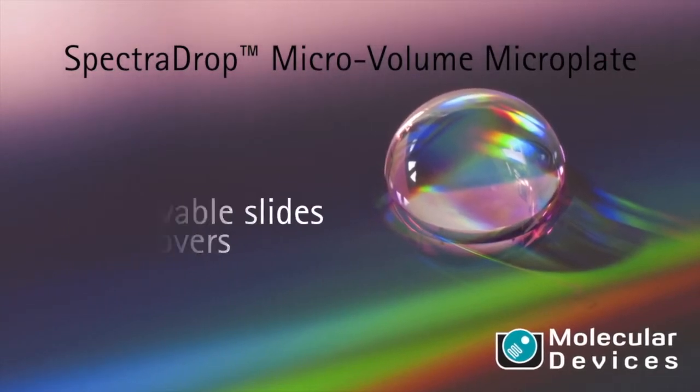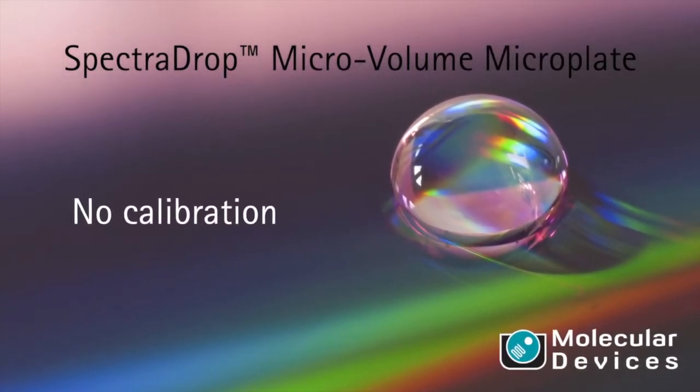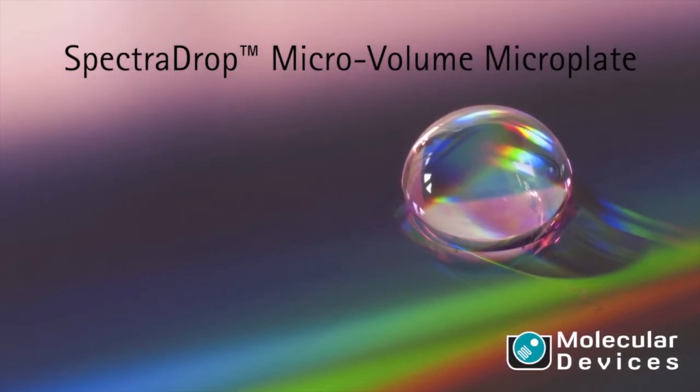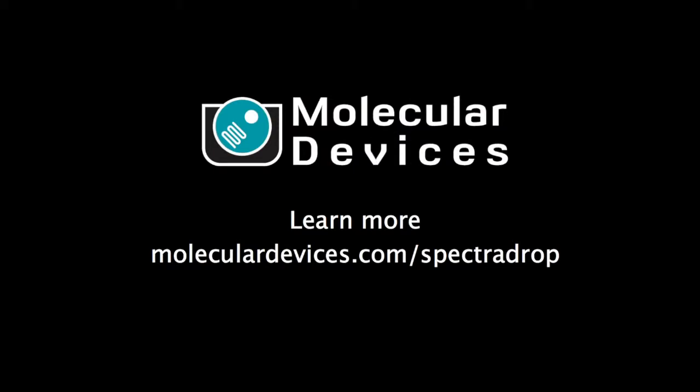The SpectraDrop Microvolume Microplate enables high-throughput, low-volume measurements with as little as 2 microliters. Discover the power of microvolume detection at the tip of your fingers with the SpectraDrop Microvolume Microplate.